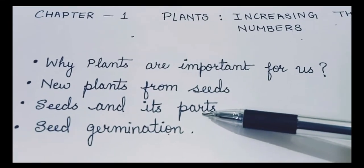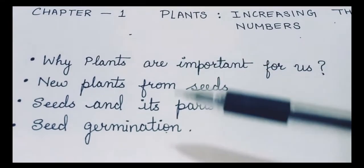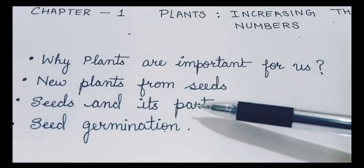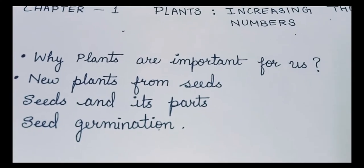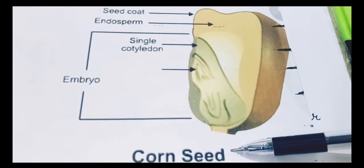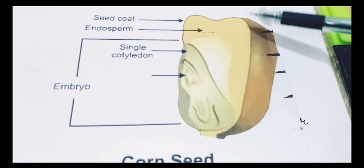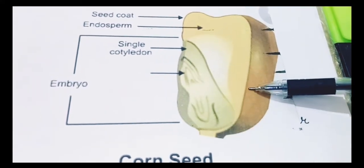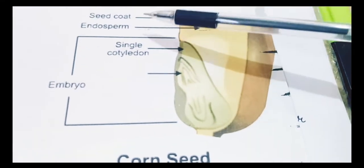Now the seeds and its parts. We have to understand first the seed and its parts. So for this you need to see a diagram. This is a seed of a corn. It's a corn seed and it is this.